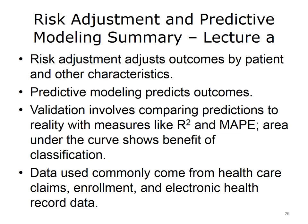This concludes Lecture A of Risk Adjustment and Predictive Modeling. In this lecture, we showed that risk adjustment is the process of adjusting outcomes by patient variables such as age, health status, and other conditions, while predictive modeling attempts to predict the likelihood of an outcome. We discussed how validating the models requires comparing predictions to reality, including R-squared or proportion of variation explained, the mean absolute prediction error, area under the curve, and other classification metrics. Finally, data come from many different sources, but most common are healthcare claims, enrollment, and electronic health record data.